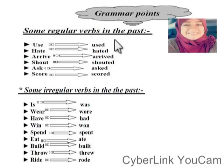But we also have irregular verbs — الأفعال الغير منتظمة أو الشاذة. These have completely different forms. Is → Was, Were → Were, Have → Had, Win → Won, Spend → Spent, Eat → Ate, Feel → Felt, Throw → Threw, Ride → Rode.